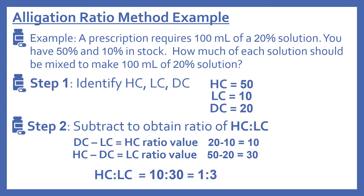Now we'll look at the example using the ratio method. A prescription requires 100 milliliters of a 20% solution. You have 50% and 10% of that solution in stock. How much of each solution should be mixed to make 100 milliliters of 20% solution? Step one: we're going to identify the high concentration, the low concentration, and the desired concentration. HC is 50, LC is 10, and DC is 20.